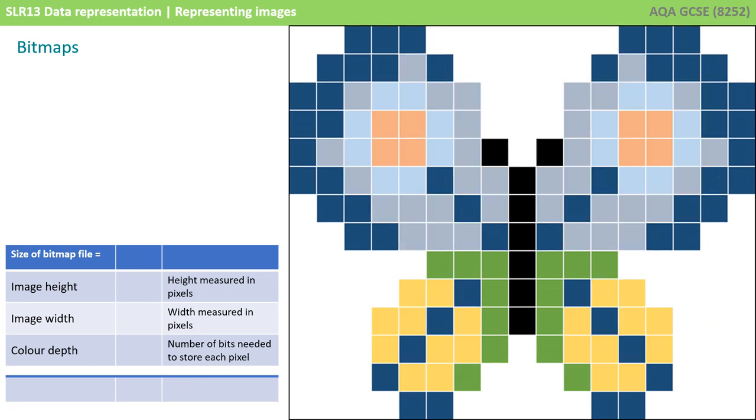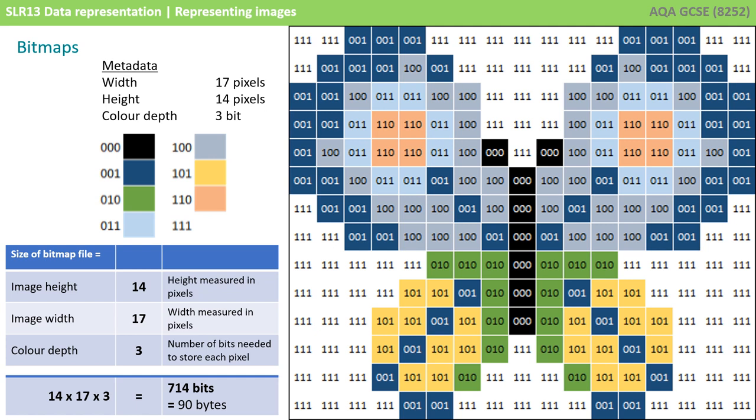Here is the image again, this time in 3-bit colour. It's worth noting that as the colour depth and resolution—that's the width and height of the image—increases, so too does the size of the file.